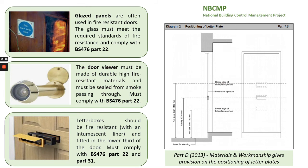Glazed panels are often used in fire-resistant doors. The glass must meet the required standards of fire resistance and comply with BS 476 Part 22. Door viewers must be made of durable high fire-resistant materials, must be sealed from smoke passing through, and must also comply with BS 476 Part 22. Letter boxes should be fire-resistant, fitted in the lower third of the door, and must comply with BS 476 Part 22 and Part 31. Part D of the Technical Guidance Documents gives provision for the positioning of letter plates.